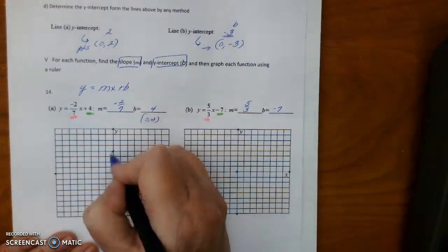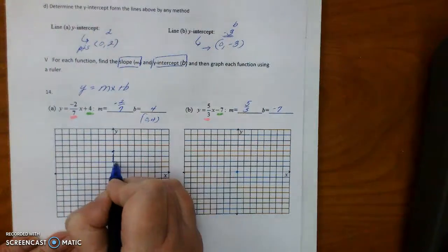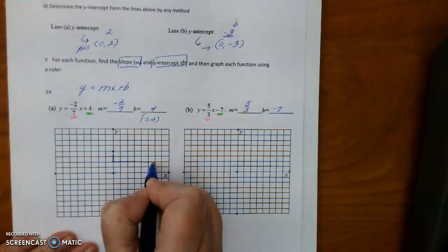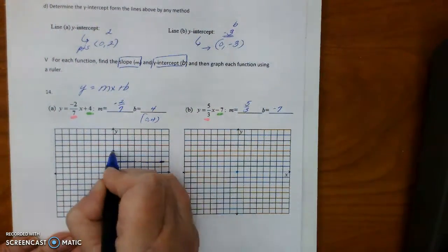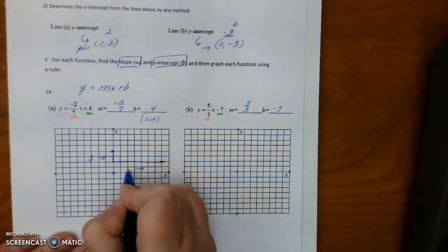And then we know the slope is you go down 2, over 7, 1, 2, 3, 4, 5, 6, 7, okay? So you go down 2, and you go over 7.